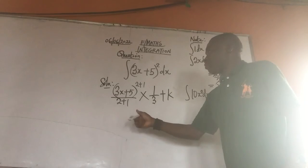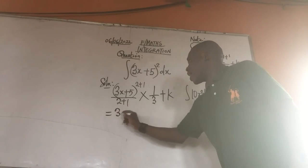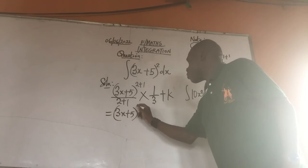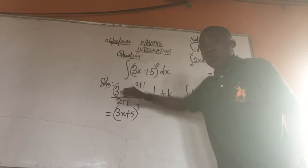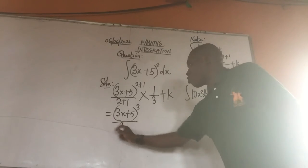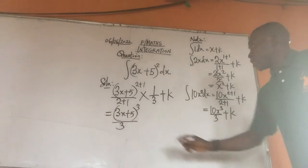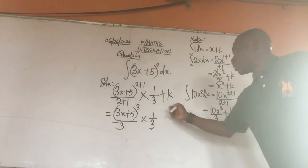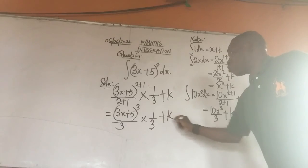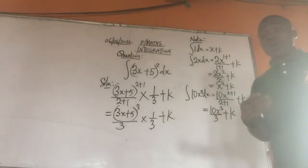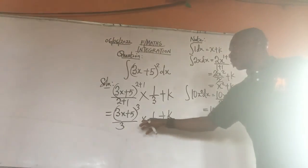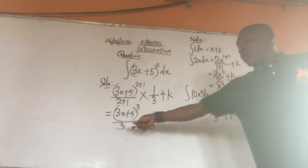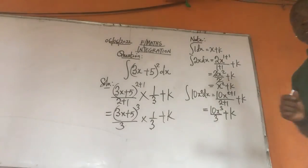So, right here, we are going to have 3x plus 5. The power of 2 plus 1, this giving us 3. Then 2 plus 1, that is over 3. Then times 1 over 3, which is this, plus the constant. It is always advisable for us to add the constant. Then all we have to do here, since we are multiplying here, we have to multiply this 3 by this 3 here. That will give us 9.